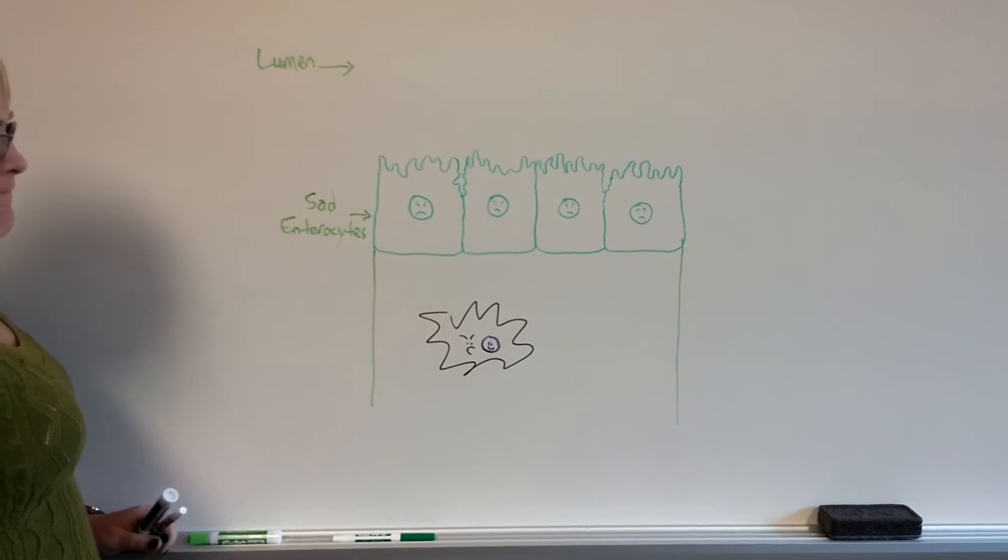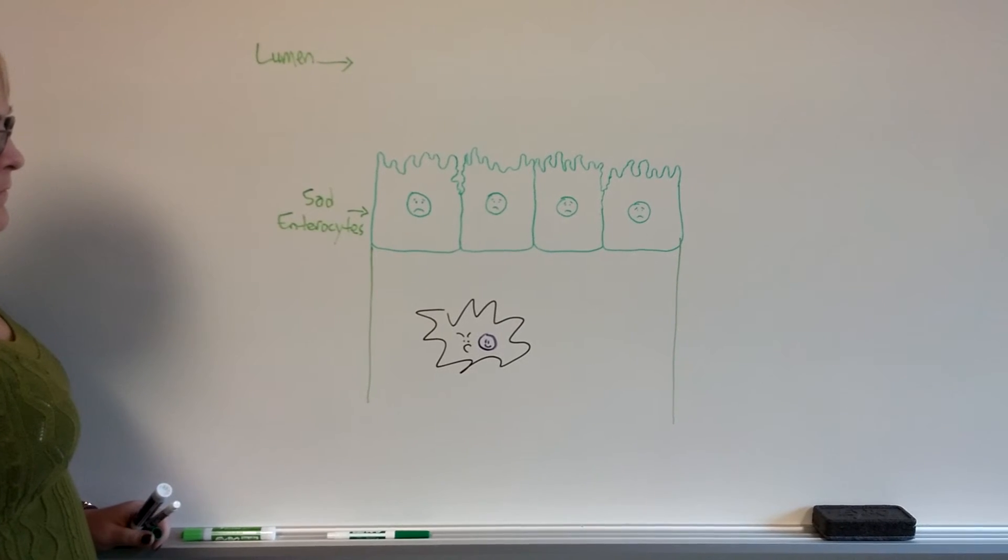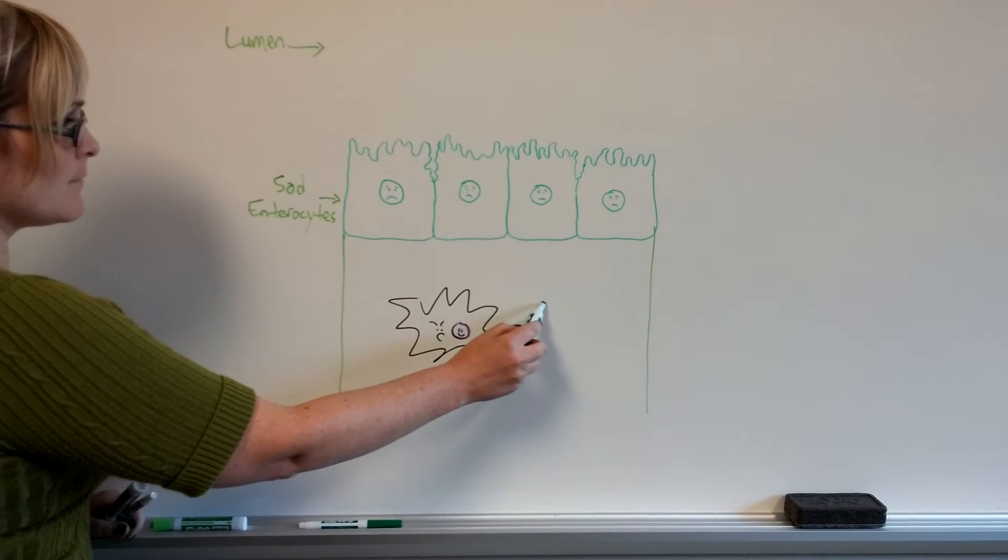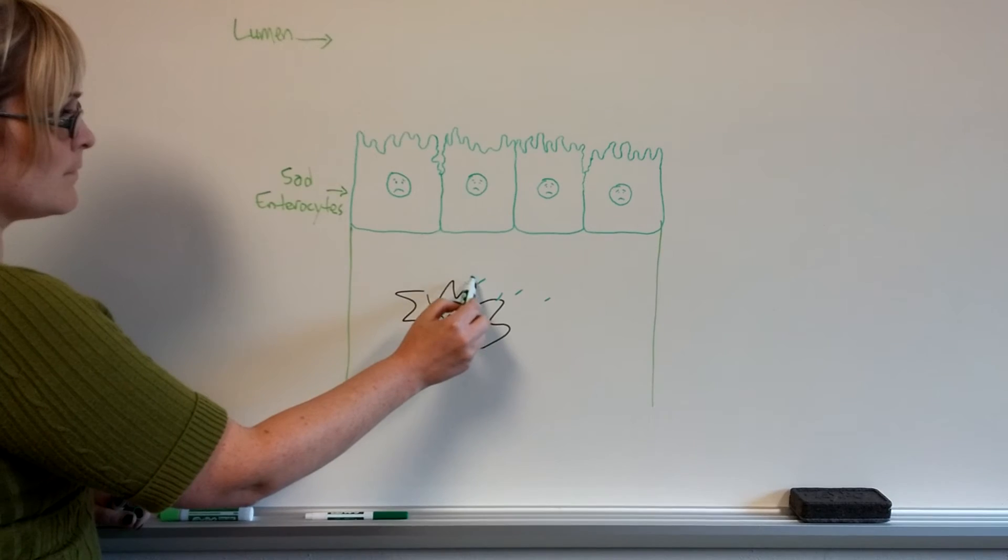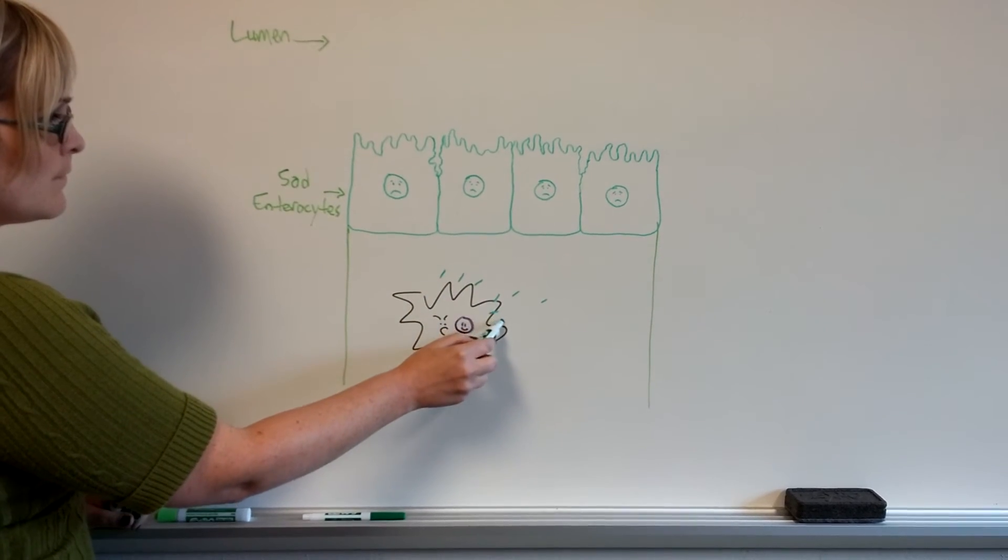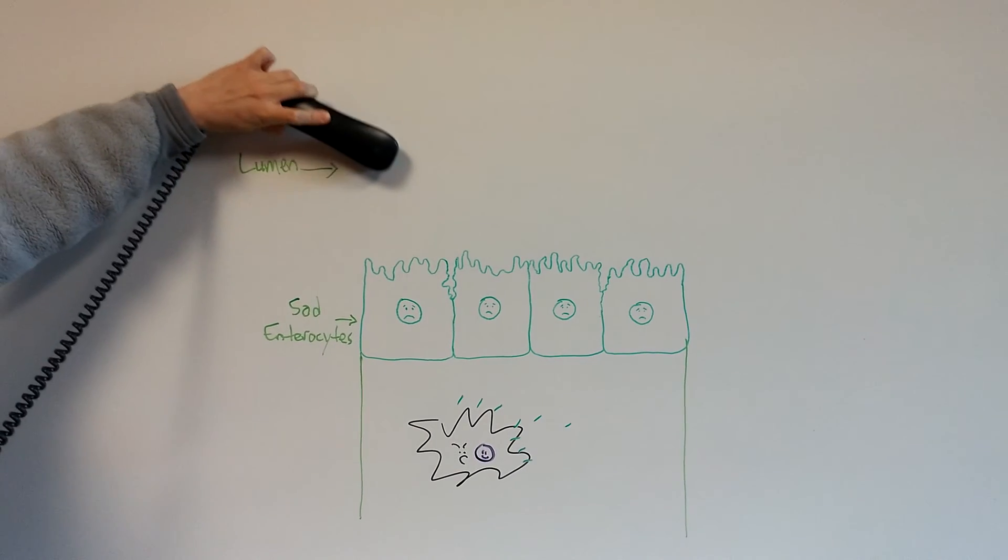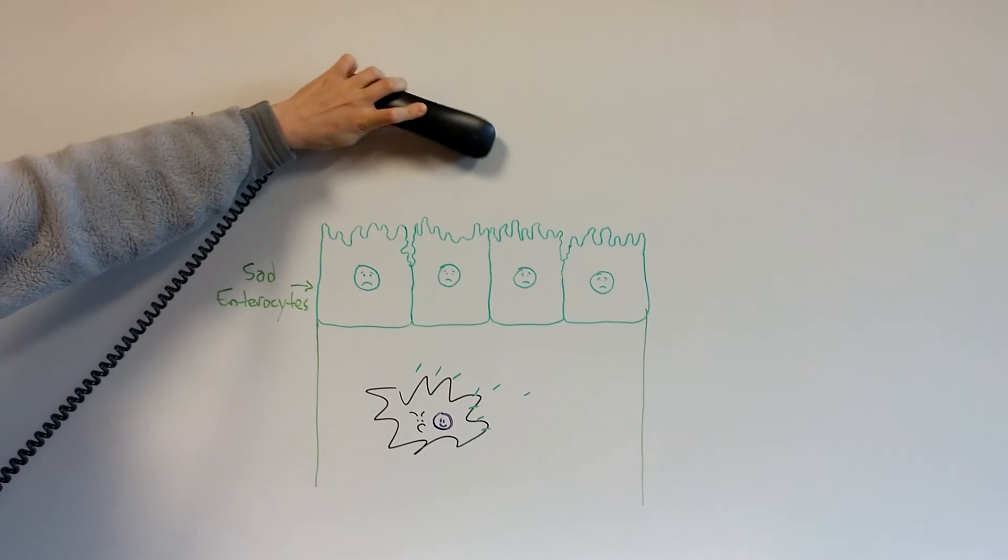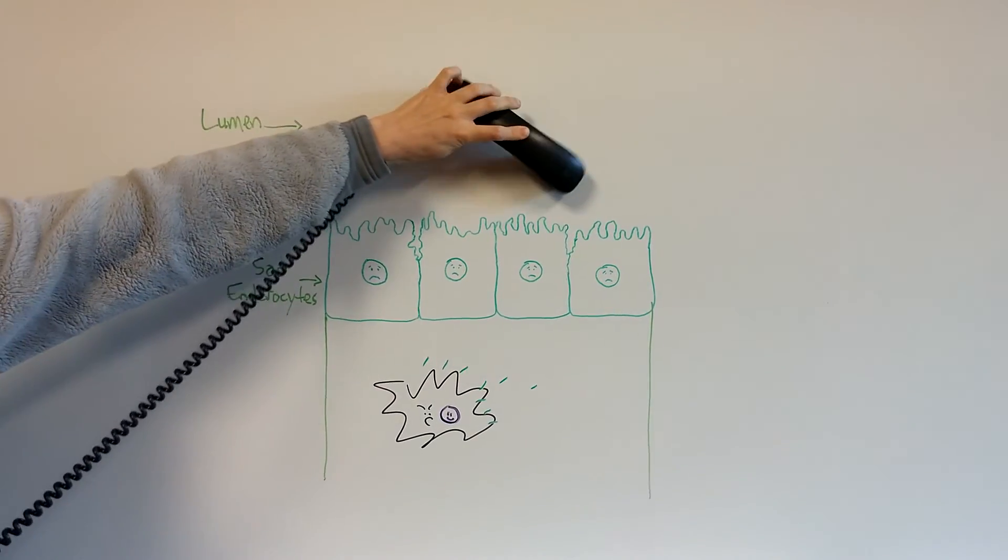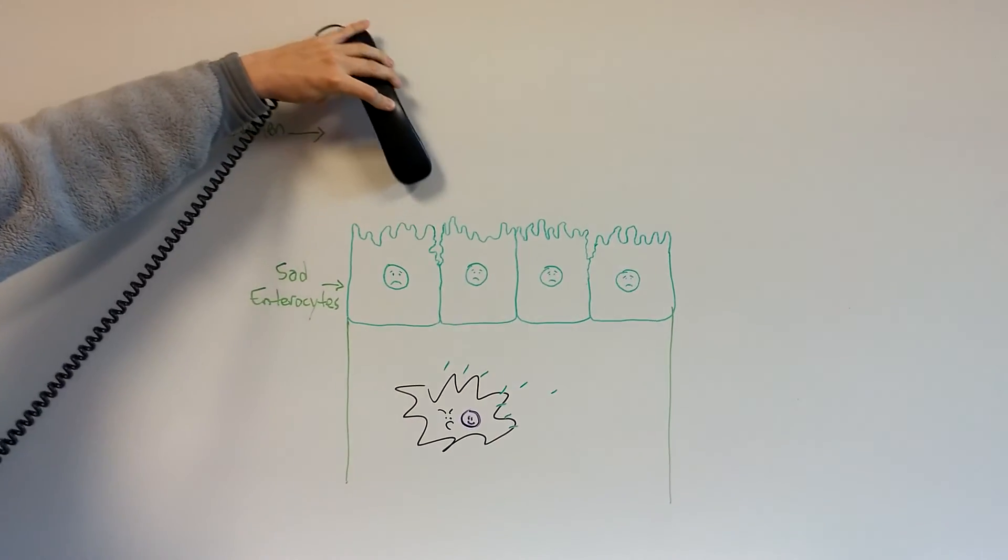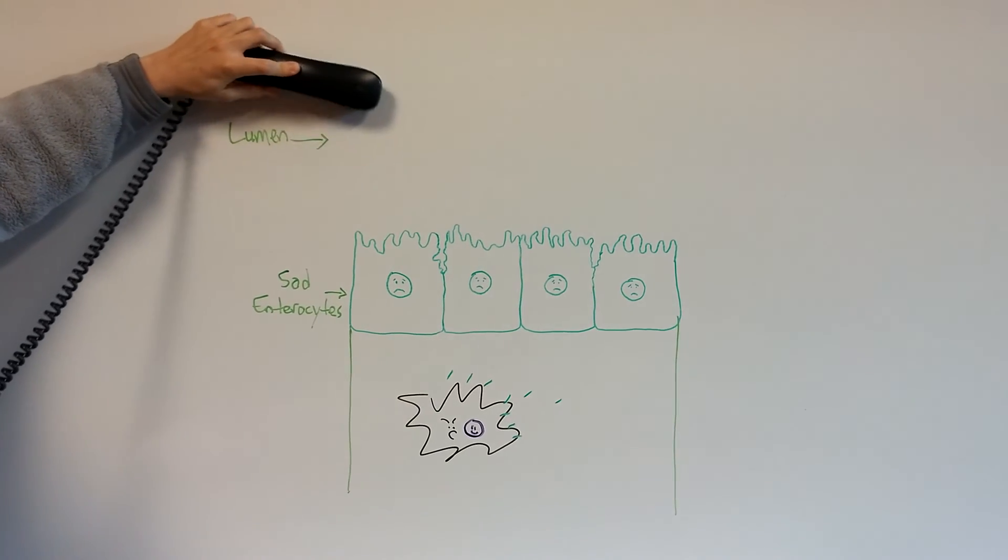This antibody will then attack the TTG gliadin complexes, signaling an adaptive autoimmune response. On endoscopy, signs of inflammation and tissue destruction such as atrophy and crypt hyperplasia will lead to malabsorption.